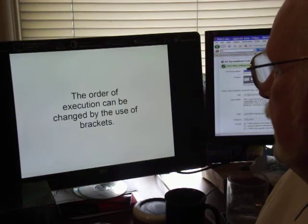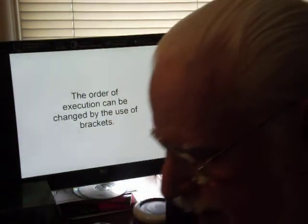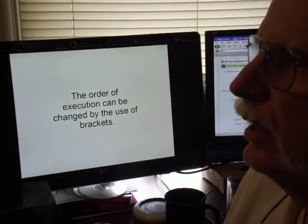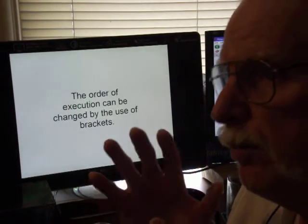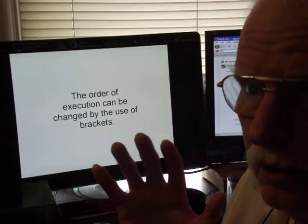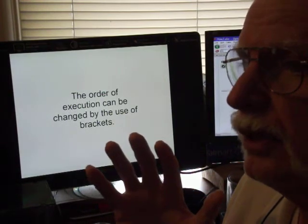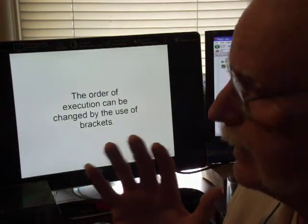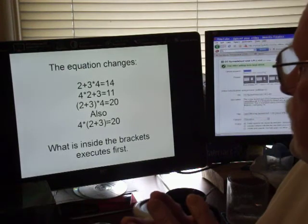The order of the execution can be changed by the use of brackets. For example, in our numbers that we were talking about, to make the two and the three add together before the multiplier kicks in, you would put them inside rounded brackets. Be sure not to use square brackets or curly brackets or anything else, but use the rounded brackets.